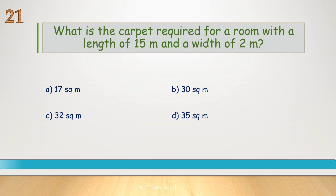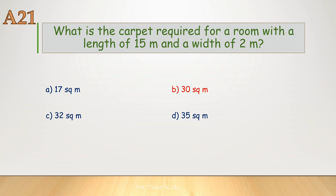What is the carpet required for a room with a length of 15 meters and a width of 2 meters? Correct answer is B, 30 square meters.